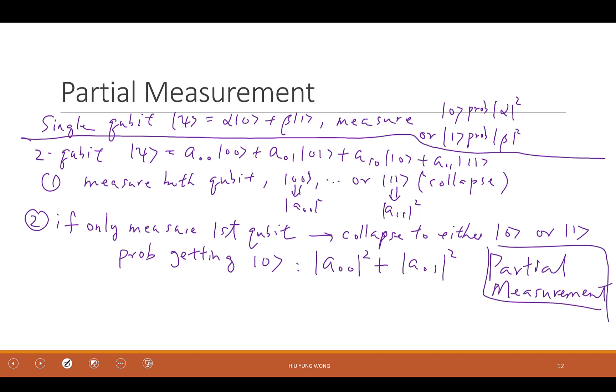Now, what the wave function will be after this measurement? What will it be? It will become A0,0 |0,0> plus A0,1 |0,1>. After it collapsed, because it doesn't have the one component anymore for the first qubit. So when you have a partial measurement, then you have the basis that corresponding to the collapse of the first qubit still remain. Others will be gone. Is this correct?